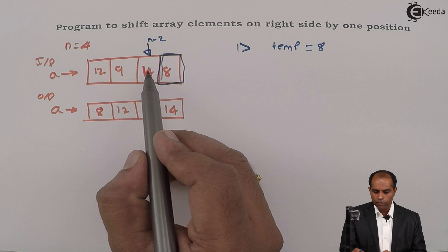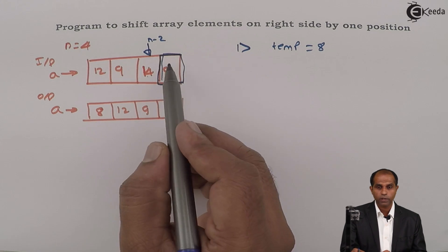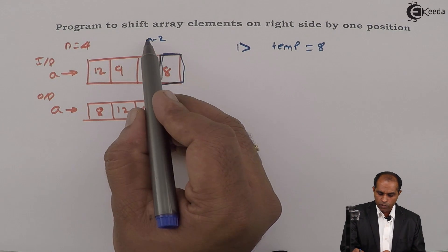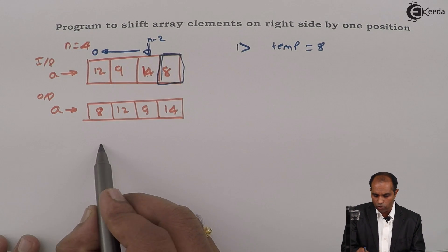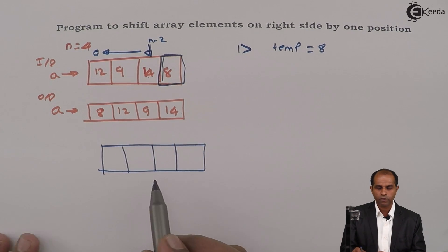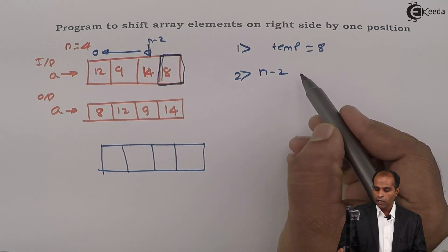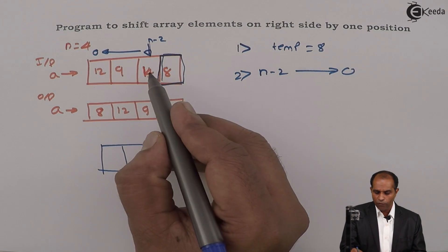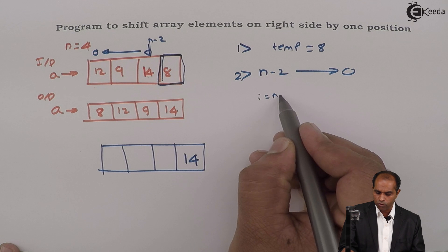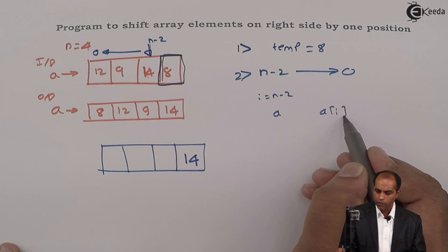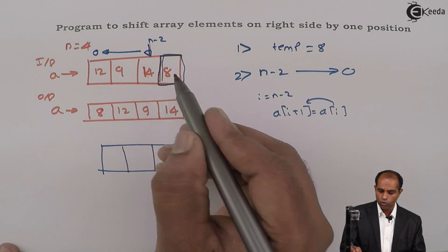When 14 goes to where 8 was, I don't have regret of losing 8 because 8 is stored temporarily. So you start from N minus 2 and move towards 0. A of N minus 2 has to go to A of N minus 1. So if i holds N minus 2, then A of i should go to A of i plus 1, because N minus 2 plus 1 is N minus 1. So A of i goes to A of i plus 1. So 14 goes to the next location.